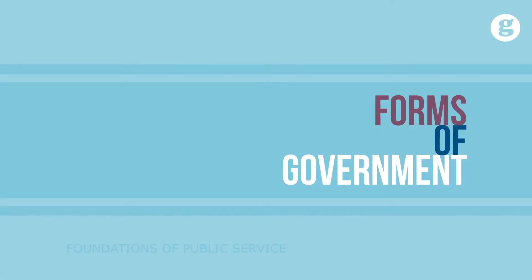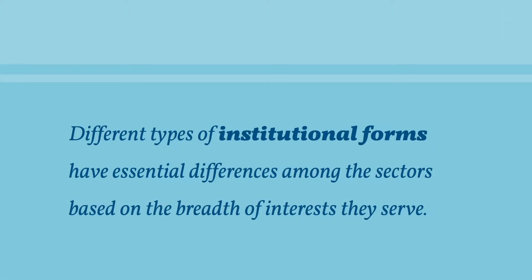An institutional approach to public service blurs any bright-line distinction among the public general government, special district government, for-profit private, and not-for-profit sectors. Different types of institutional forms have essential differences among the sectors based on how they attribute value differences and the breadth of interest they serve.